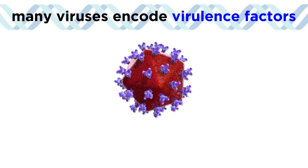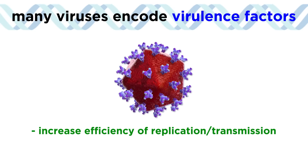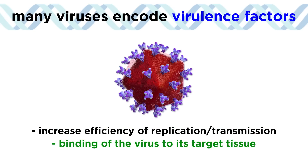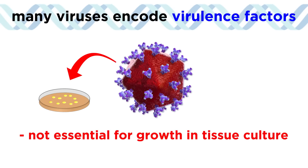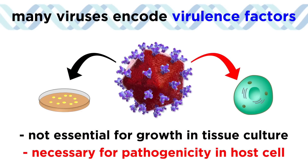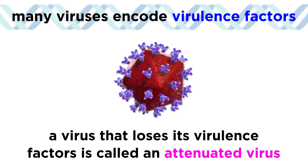Like bacteria, many viruses encode virulence factors that increase the efficacy of their replication or transmission, the binding of the virus to its target tissue, or the immune escape of the virus. These factors may not be essential for growth of the virus in something like tissue culture, but are necessary for survival or pathogenicity in a host. If a virus loses its virulence factors, we refer to the virus as attenuated.